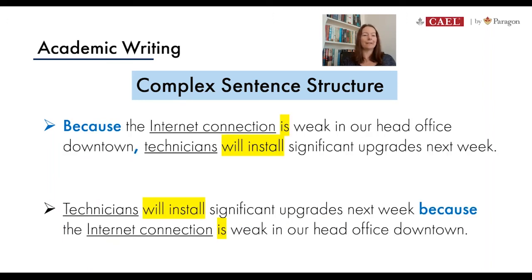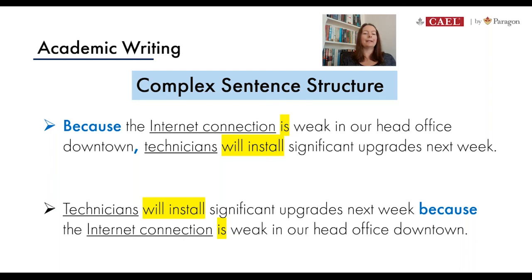Let's look at one or two more examples of complex structure. In the top, we start with the dependent piece using the conjunction 'because': 'Because the internet connection is weak in our head office downtown, technicians will install significant upgrades next week.' Notice that because we started with the conjunction and the dependent piece, we've added the comma. In the bottom: 'Technicians will install significant upgrades next week because the internet connection is weak in our head office downtown.' We started with the independent, strong, complete part — so no comma is necessary.